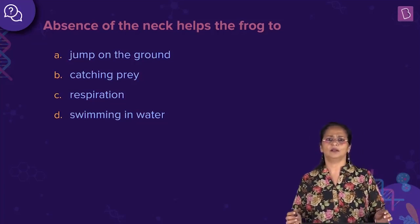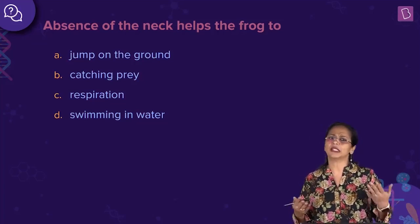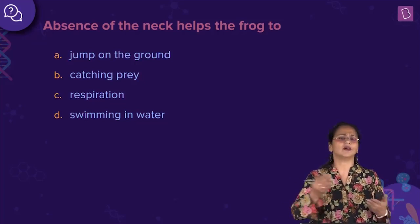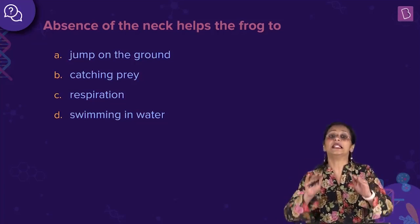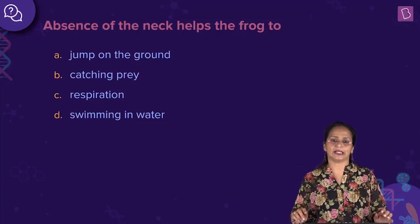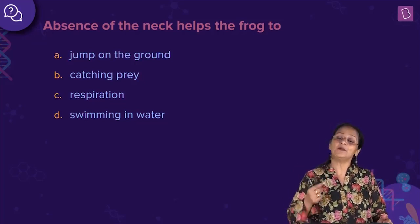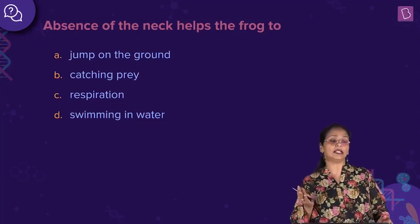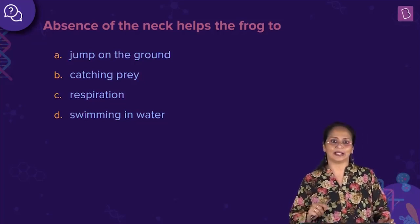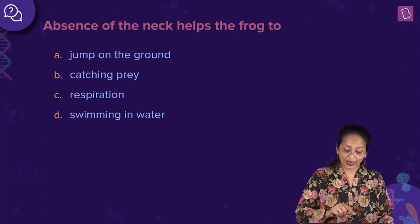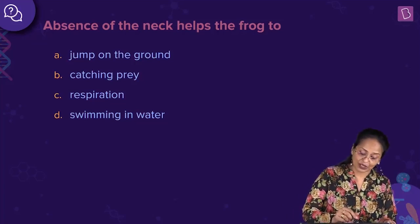Have you noticed how a frog moves? In the larval stage it swims, but on the ground it hops — it jumps using its hind legs. This is supported by the fact that there is no neck. So absence of neck helps the frog to jump on the ground.